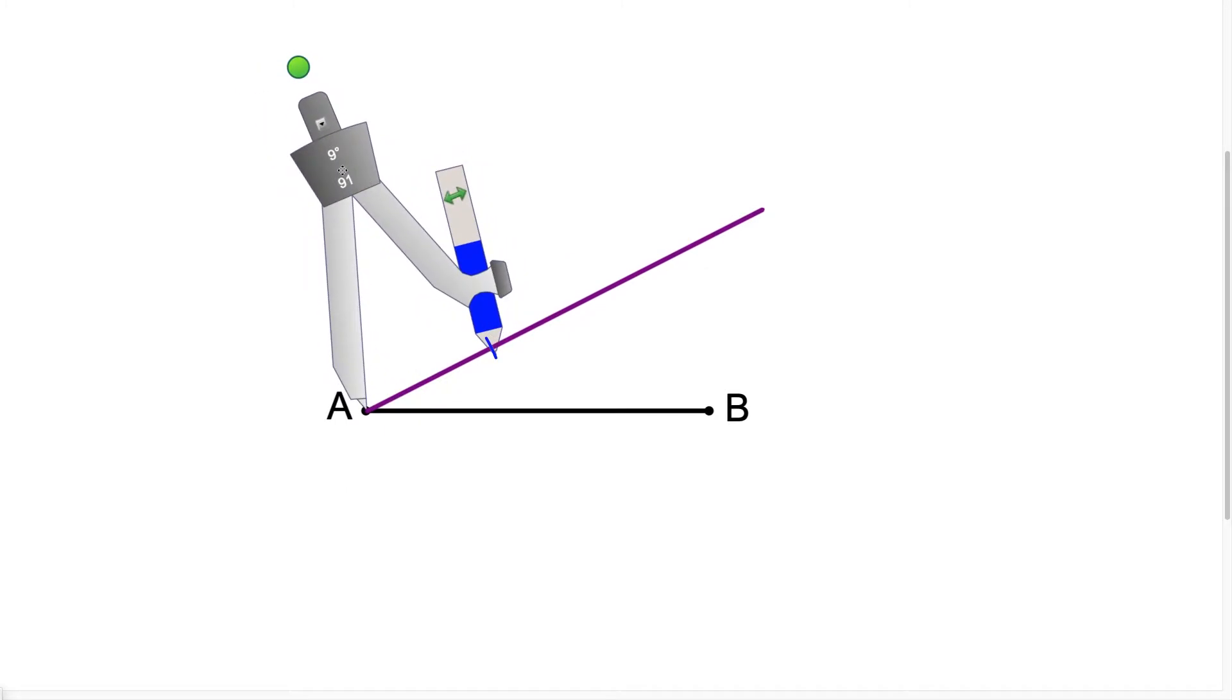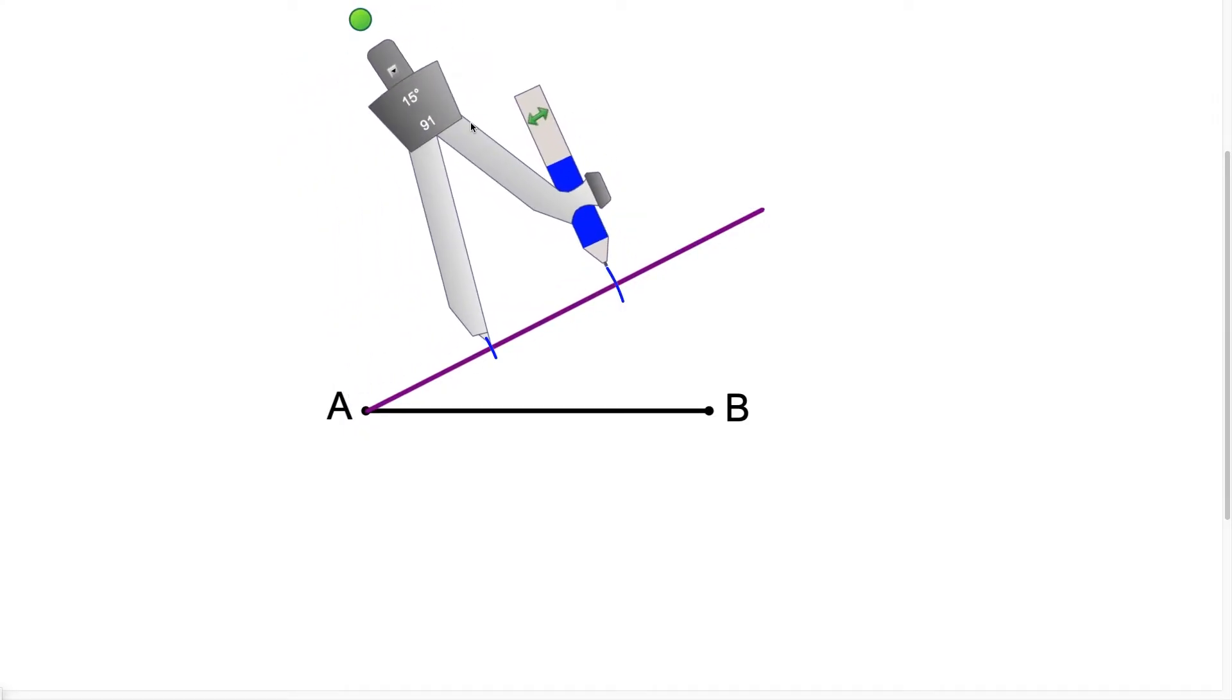So I make one here and then I move the compass over to the mark I just made and I make my second one and I'm going to make one more because once again if I'm cutting AB into three equal pieces then I need to make three of these marks.